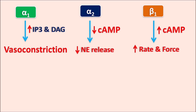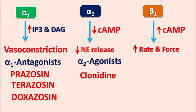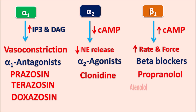Alpha-1 receptors directly control blood pressure by producing vasoconstriction, so we can use alpha-1 antagonists like prazosin, terazosin, and doxazosin - all alpha-1 antagonists used in hypertension, preferred for severe hypertension. Alpha-2 agonists like clonidine act on alpha-2 receptors to decrease central sympathetic activity. Beta blockers like propranolol, atenolol, and metoprolol can reduce cardiac stimulation and decrease blood pressure. Alpha-2 antagonists like yohimbine should not be used.